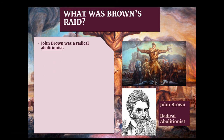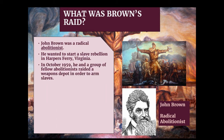John Brown was a radical abolitionist whose life was devoted to getting rid of slavery any way he could. Those pictures convey that he was a rather intense guy. He wanted to start a slave rebellion in Harper's Ferry, Virginia, believing that if you gave slaves guns, they would fight for their freedom. So in October of 1859, he and a group of fellow abolitionists raided a federal weapons depot to arm the slaves, with the intention that the slaves would rise up against their masters.